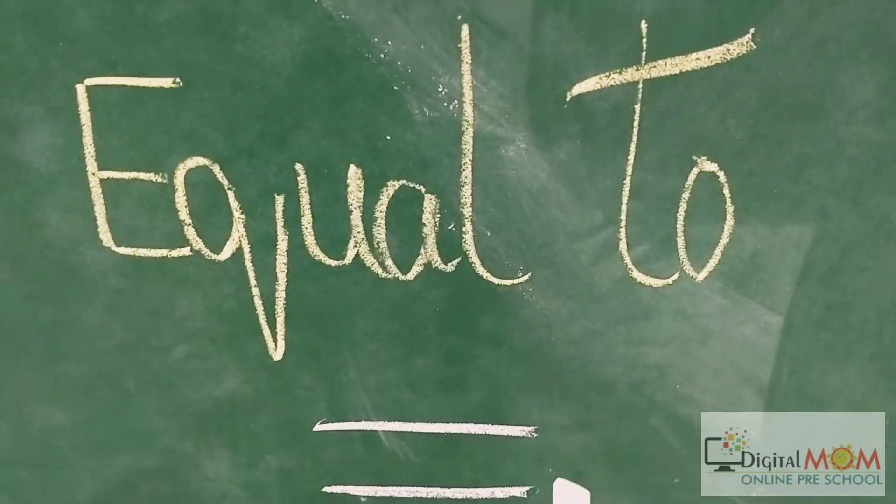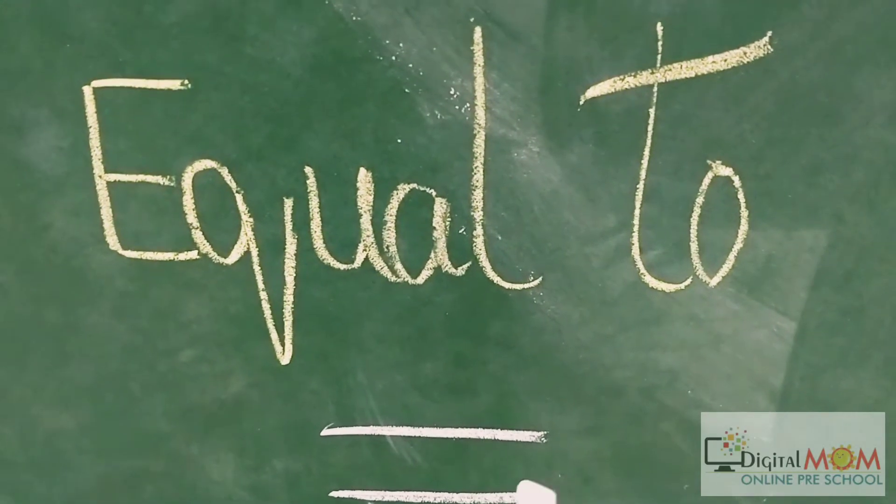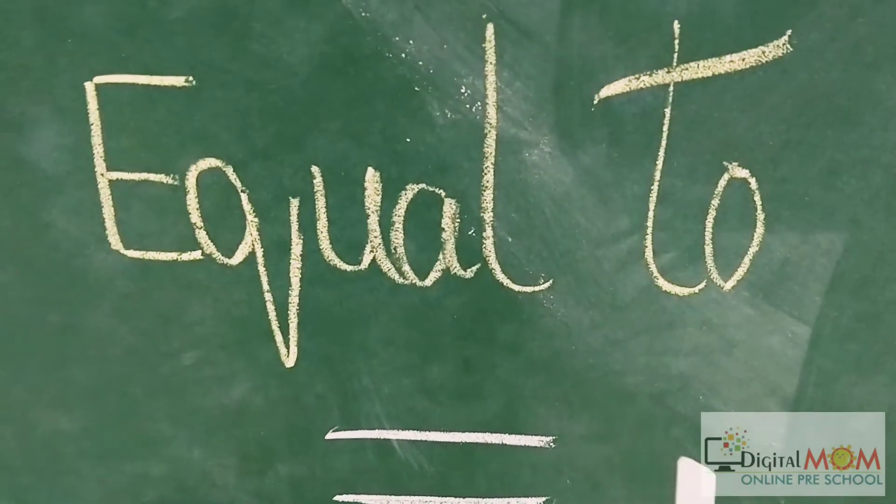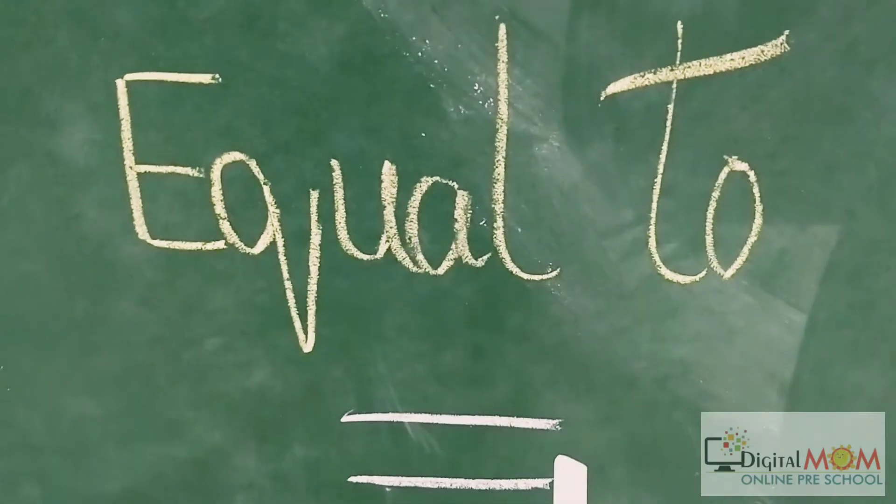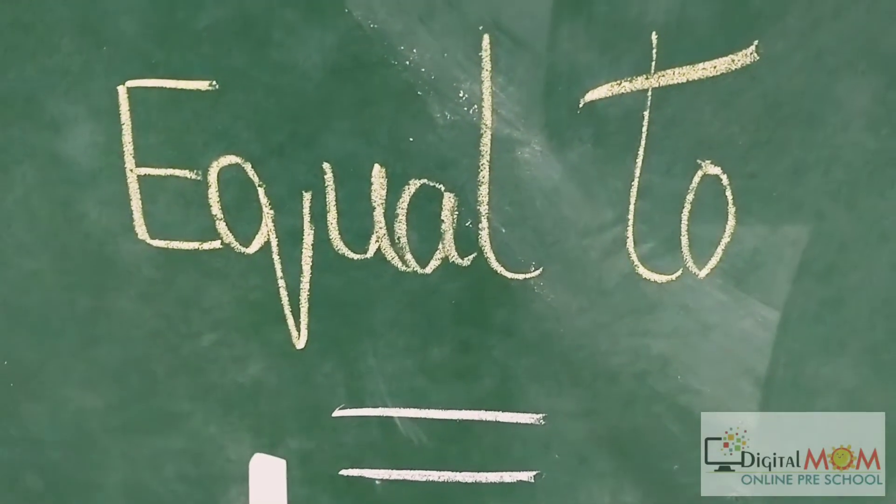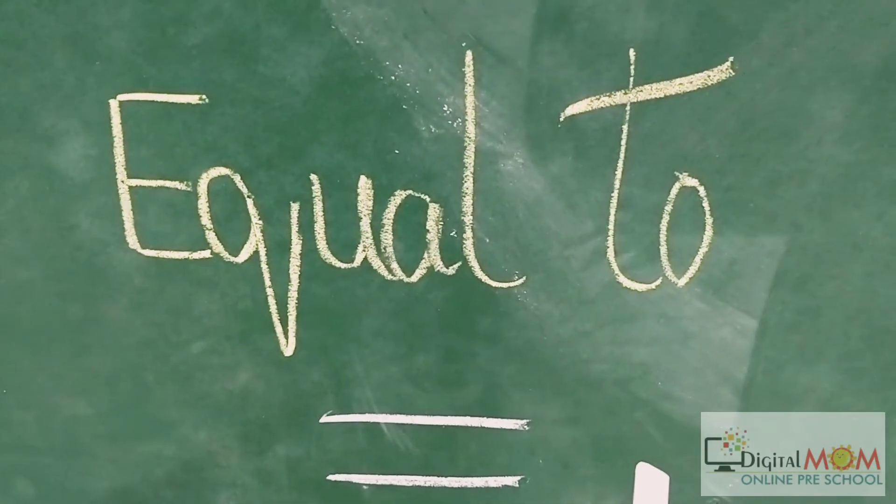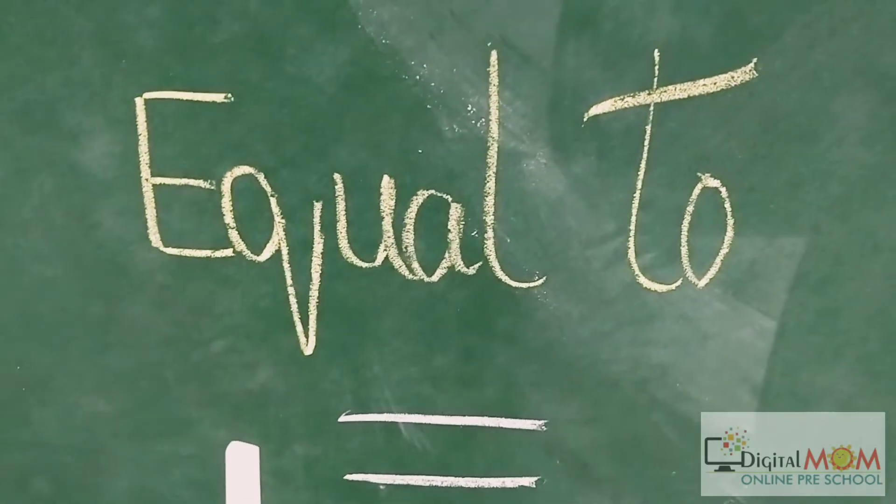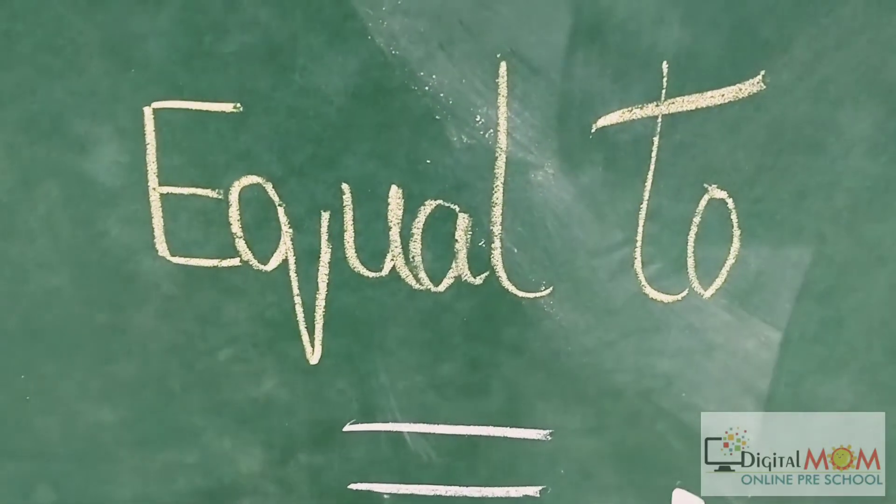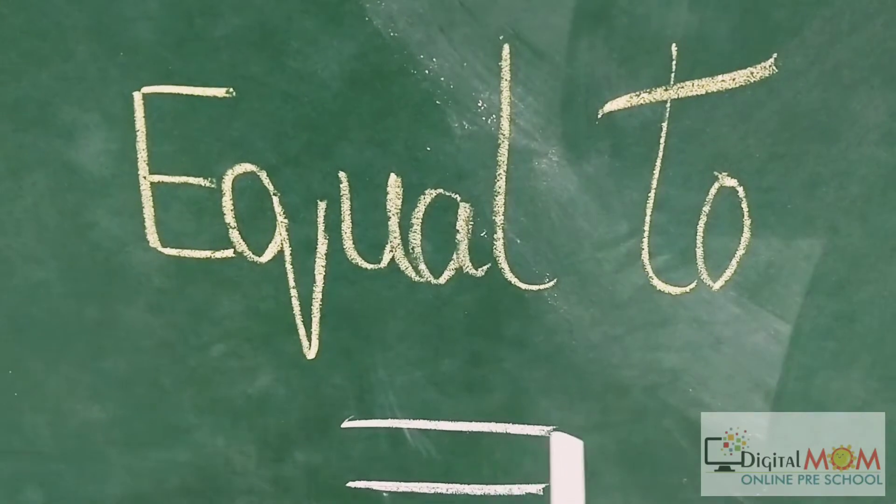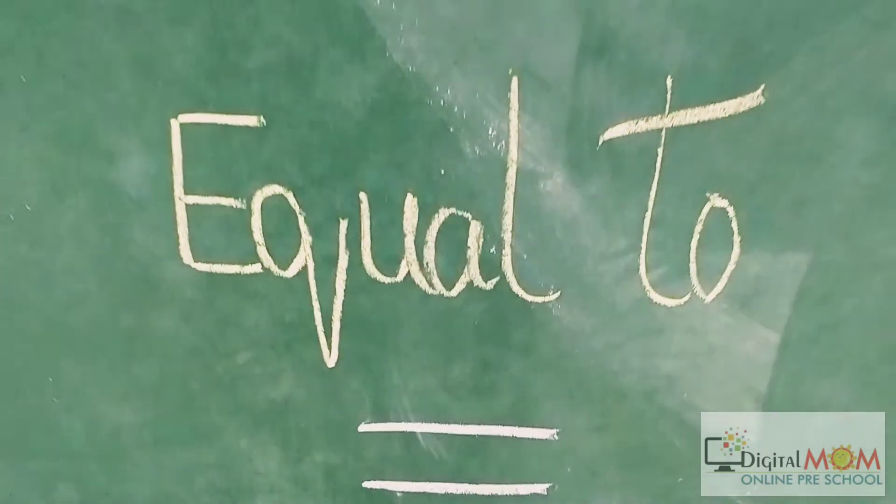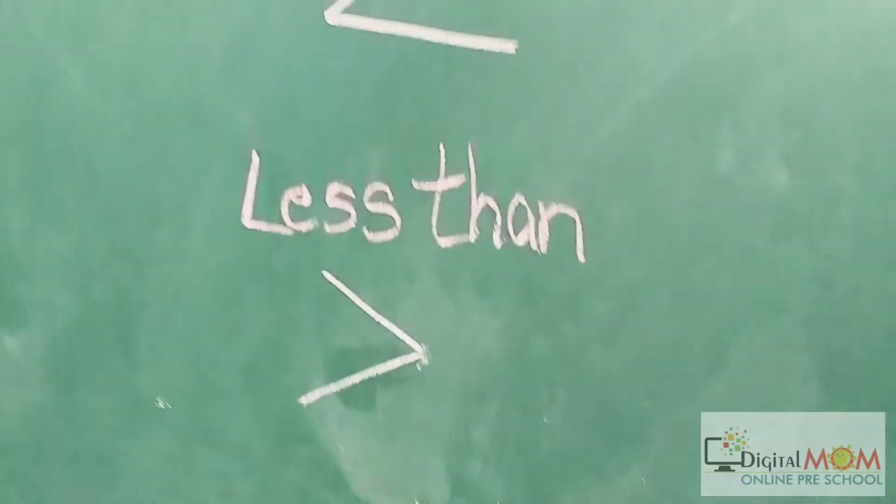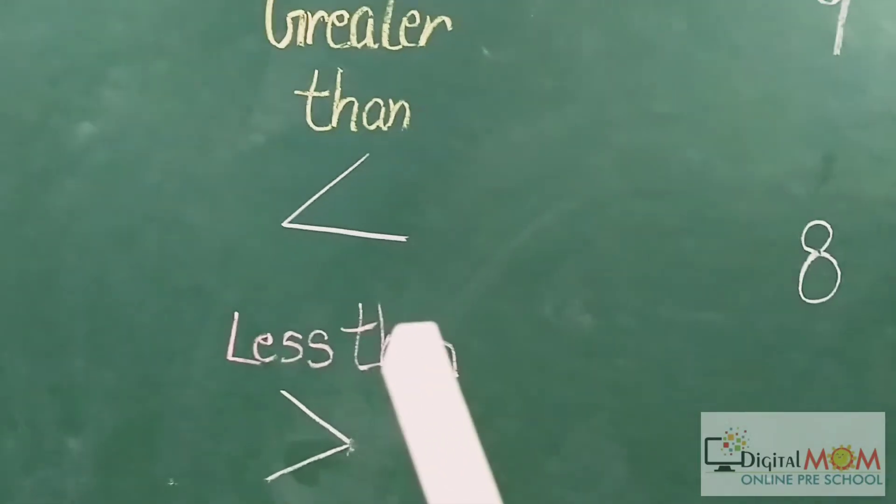Remember, the alligator always opens his mouth wide and eats from both sides when the number is equal on both parts. Like if here we are having the same number and here also, you will put the equal to sign. So now let's see greater than, less than, equal to with some examples.